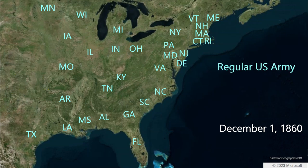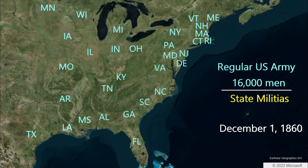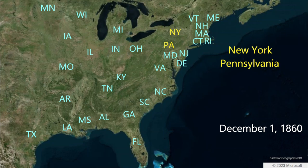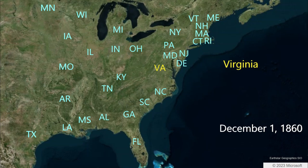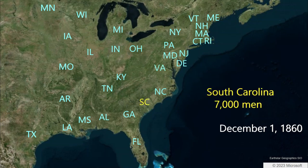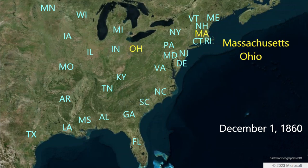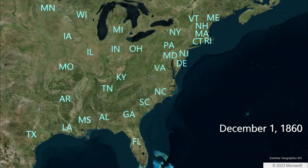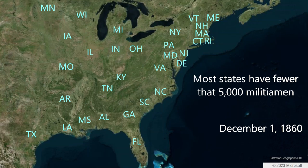The regular United States Army is tiny in 1860, with about 16,000 men in uniform. Defense was largely passed on to state militia — there were some 115,000 active militia among all the states in 1860. New York and Pennsylvania had the largest active state militias, with 19,000 men in each state. Virginia had the next largest militia, with nearly 14,000 men. South Carolina had 7,000 militia. Massachusetts and Ohio each had about 5,500 men. No other state had more than 5,000 active men in its state militia.